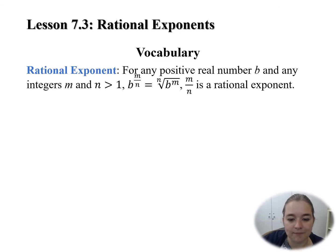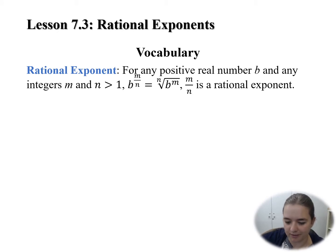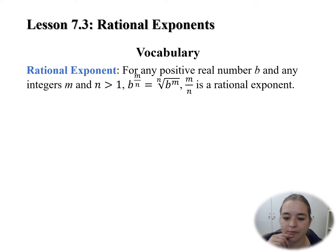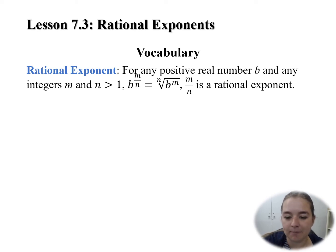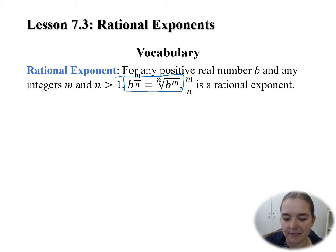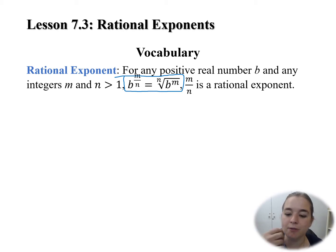Our first vocab term today is the idea of a rational exponent, and this is a really big one — something you need to understand and commit to memory. For any positive real number b and any integers m and n greater than 1, b to the power of m over n is equal to the nth root of b to the power of m. Our rational exponent is that idea of m over n.